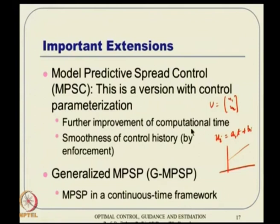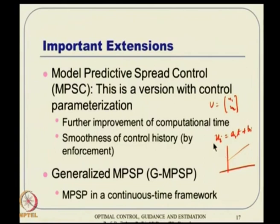With MPSC, smoothness is guaranteed by enforcement: no matter what a_i and b_i you take, u_i is guaranteed to be a smooth function of time. This is a theoretical guarantee that does not automatically come from the basic MPSP where every grid point is treated as an independent value. We will see this in one or two classes from now.